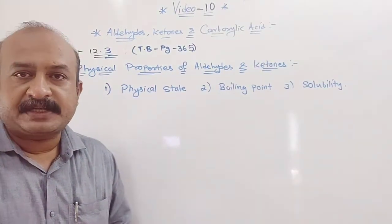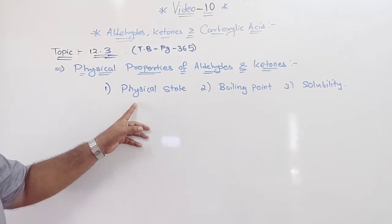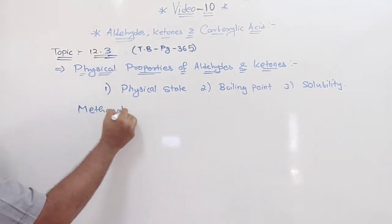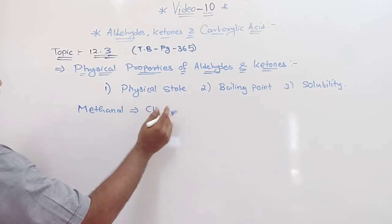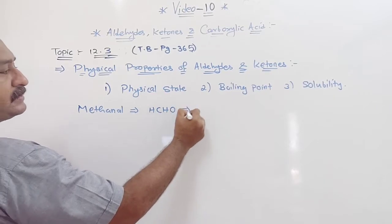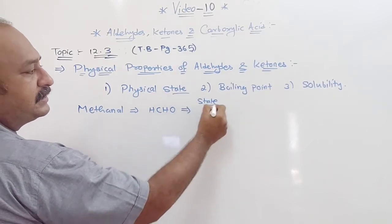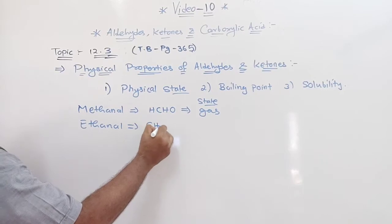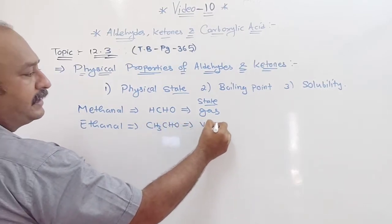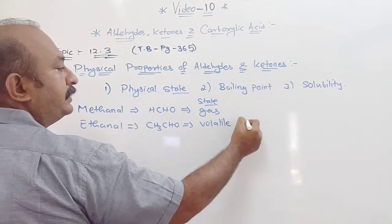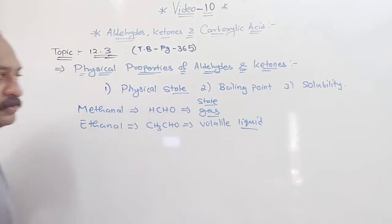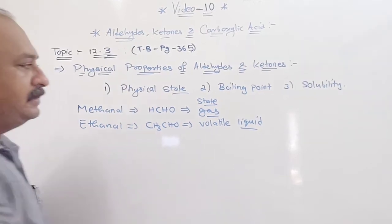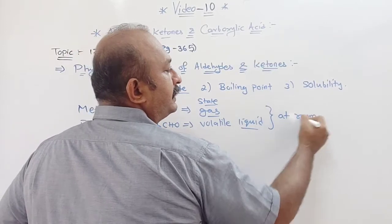When we talk about physical state, methanal — whose formula is HCHO — is a gas. Ethanal, that is CH3CHO, is a volatile liquid. So here we came to know that methanal is a gas and ethanal is a volatile liquid at room temperature.